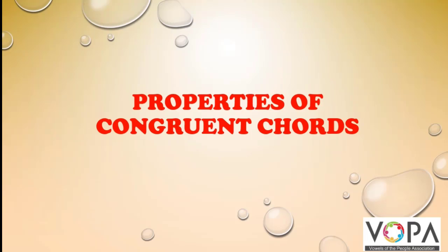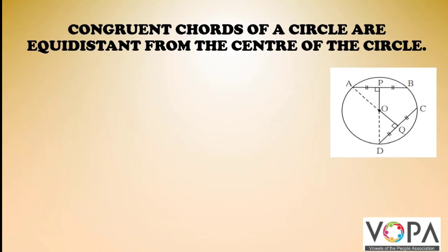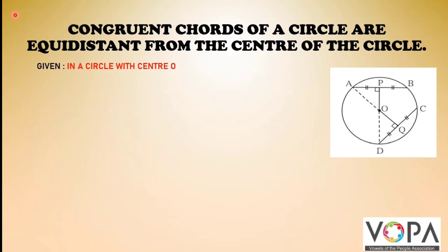The next theorem we are going to learn is properties of congruent chords. Congruent chords of a circle are equidistant from the center of the circle. Congruent chords means the chords which are equal in length are equidistant — they are at equal distances from the center. Given: a circle with center O.